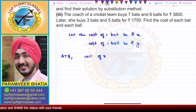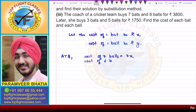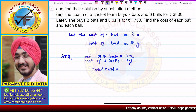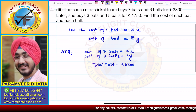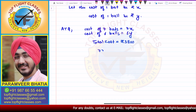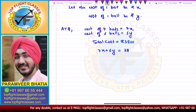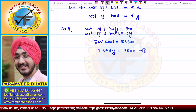Now according to the question, in the first part: cost of seven bats is equal to 7x, and the cost of six balls is equal to 6y. The total cost given is rupees 3800. So from here I get that 7x + 6y = 3800, and this is my first equation.